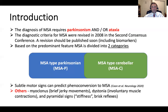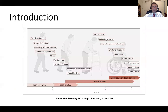Although Parkinsonism and ataxia are the two main motor manifestations of MSA, patients can also present with myoclonus — brief jerky movements — dystonia defined as sustained motor contraction, and manifestations of pyramidal tract involvement such as brisk reflexes, stiffness, or spasticity. Autonomic symptoms such as sexual dysfunction, urinary dysfunction, orthostatic hypotension, and non-motor symptoms like REM sleep behavior disorder can precede motor symptoms by many years.